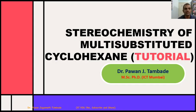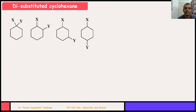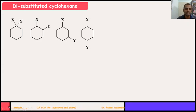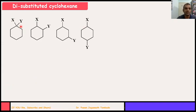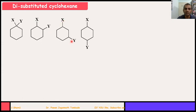So for that, first of all consider a disubstituted cyclohexane. In case of disubstituted cyclohexane, two atoms or groups are present on cyclohexane. They may be similar or they may be dissimilar. These four different possibilities are there: X and Y may present on the same carbon atom — this is 1,1-disubstituted. They may present on neighboring carbon atom 1,2. They may present on relatively 1,3 or 1,4 positions.